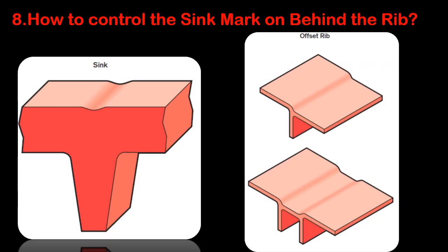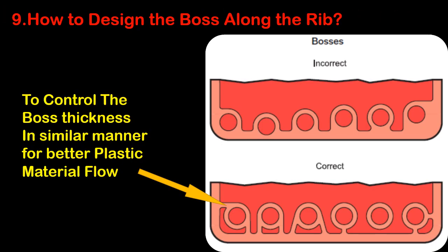Question number eight: how to control the sink mark behind a rib? To avoid the sink mark behind the rib, design the rib by offsetting it a suitable distance or depth. During design, take care that the thickness of the component should not be reduced.